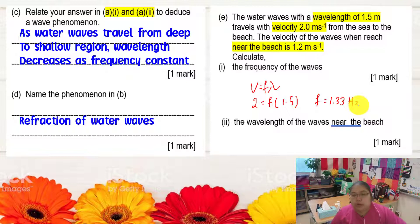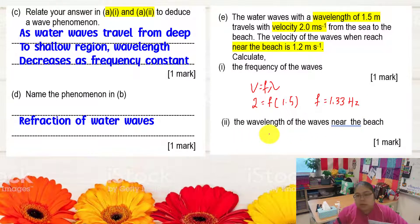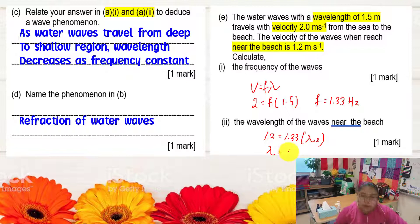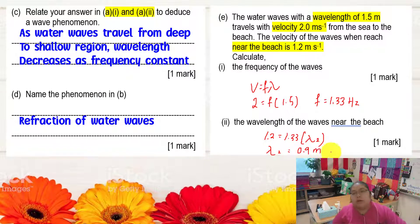Question two asks for the wavelength when the wave is near the beach — the shallow region. We know frequency is 1.33 Hz and velocity at the beach is 1.2 m/s. Using v = fλ: λ₂ = 1.2 divided by 1.33, giving λ₂ = 0.9 m. That completes the calculation for part E.